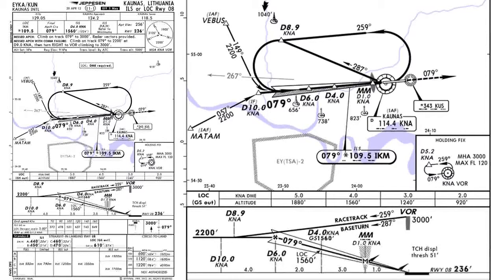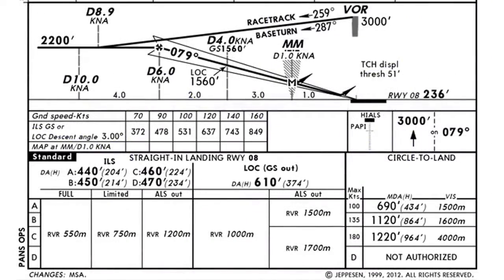Our altitude must be 1560 feet at that point. Airport elevation is 236 feet. Missed approach procedure: climb on track 079, which is runway heading, to 3000 feet — radar vectors will be provided. Missed approach with communication failure: climb on track 079 to 2200 feet at distance 9 miles from KN Alpha, then fly to VOR climbing to 3000 feet. Our minimums — we are a category A airplane and ILS is fully operational, so our minimums will be 440 feet. Since on the FNTP Garmin I can't set exactly 440 feet, I will set the altitude alert to 500 feet.